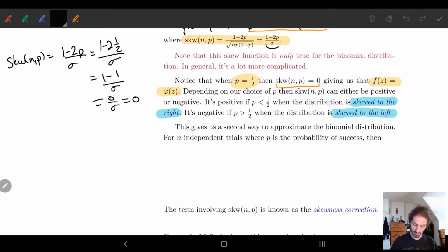And so what this gives us is actually a second way to approximate the binomial distribution. And so basically what we have is the second way is, well, we kind of do the same thing.